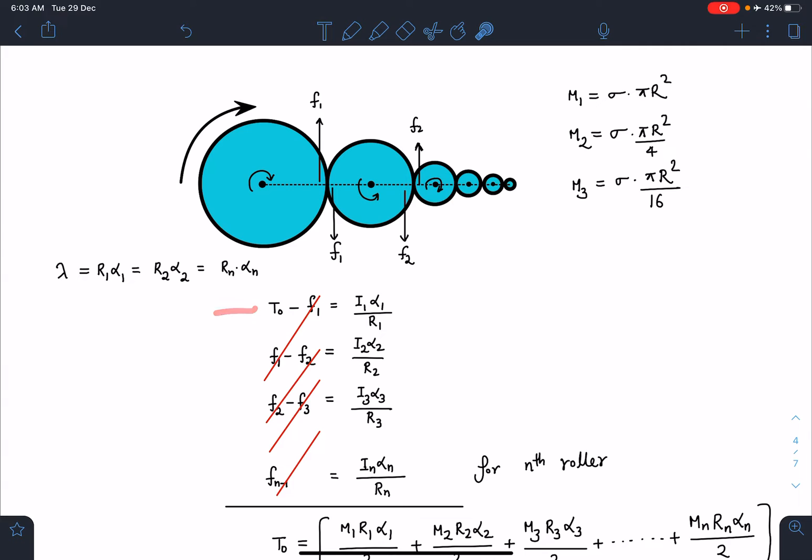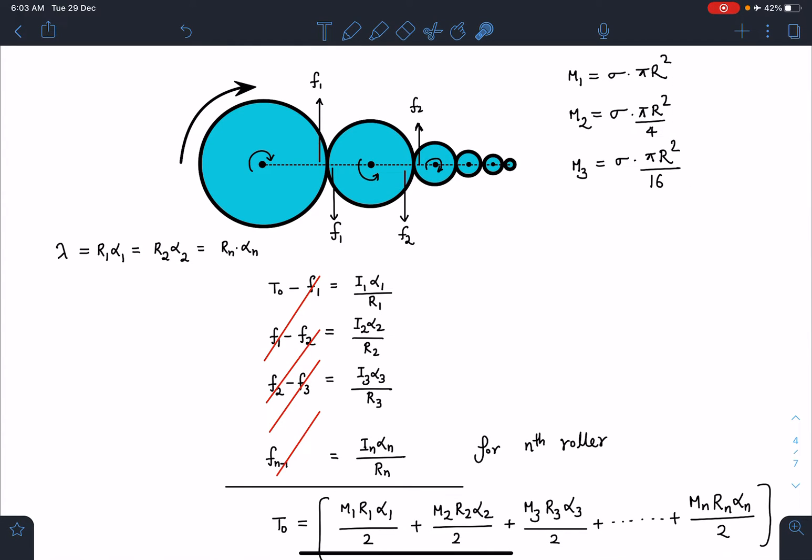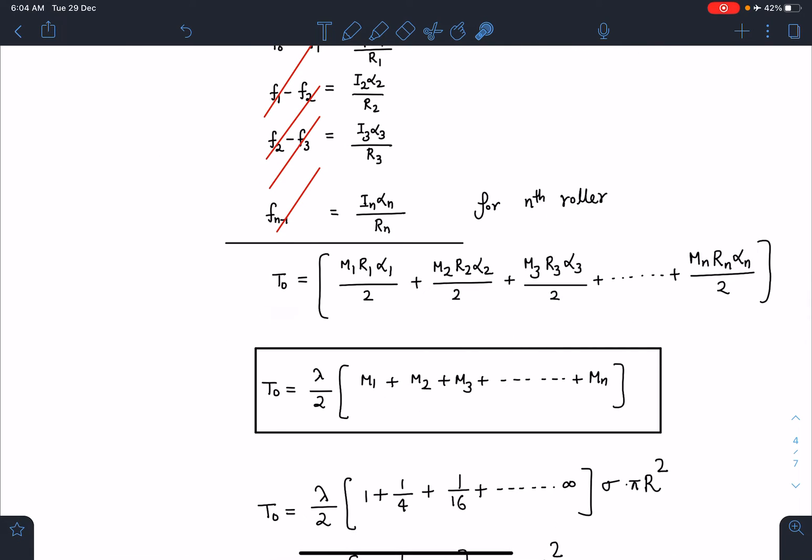From the condition of no slipping: r₁α₁ = r₂α₂ = r₃α₃ = ... = rₙαₙ. For the first roller, the torque equation is T₀ - f₁ = I₁α₁/r₁. Similarly for the next one: f₁ - f₂ = I₂α₂/r₂. For the nth roller, only one friction term appears. When we add these equations, all the friction terms cancel and we get T₀ = m₁r₁α + m₂r₂α + m₃r₃α + ... + mₙrₙα.